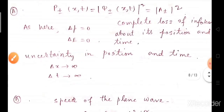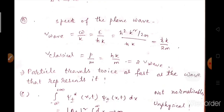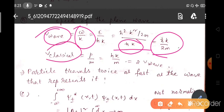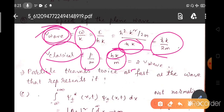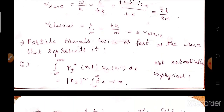When we find the probability, P± equals |ψ±(x,t)|² which becomes |A±|². This is a complete loss of information because it is independent of time and independent of position. Another problem is when we find the speed of the plane wave: V_wave equals ω/k equals (E/h-bar) divided by k. Substituting E equals h-bar² k²/2m, we get V_wave equals h-bar k / 2m. But classically V equals p/m equals h-bar k/m. So the particle velocity is twice the wave velocity — the particle travels twice as fast as the wave that represents it.